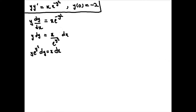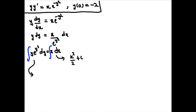Now we're going to take the integral of both sides — the integral of that side and the integral of that side. The right side is quite straightforward; this is simply x squared over 2 plus C. The left side requires a bit of manipulation, so we're going to try substitution.